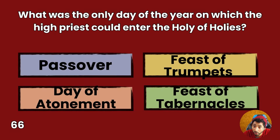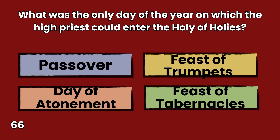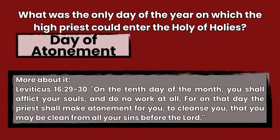Question 66: What was the only day of the year on which the high priest could enter the Holy of Holies? Passover, Feast of Trumpets, Day of Atonement, or Feast of Tabernacles? Answer: Day of Atonement. Leviticus 16:29-30 — On the tenth day of the month you shall afflict your souls, and do not work at all. For on that day the priest shall make atonement for you, to cleanse you, that you may be clean from all your sins before the Lord.